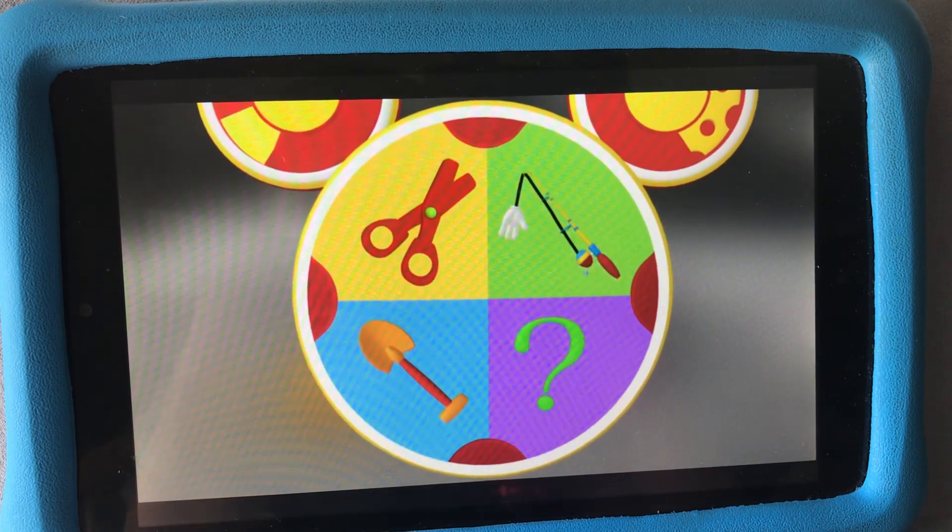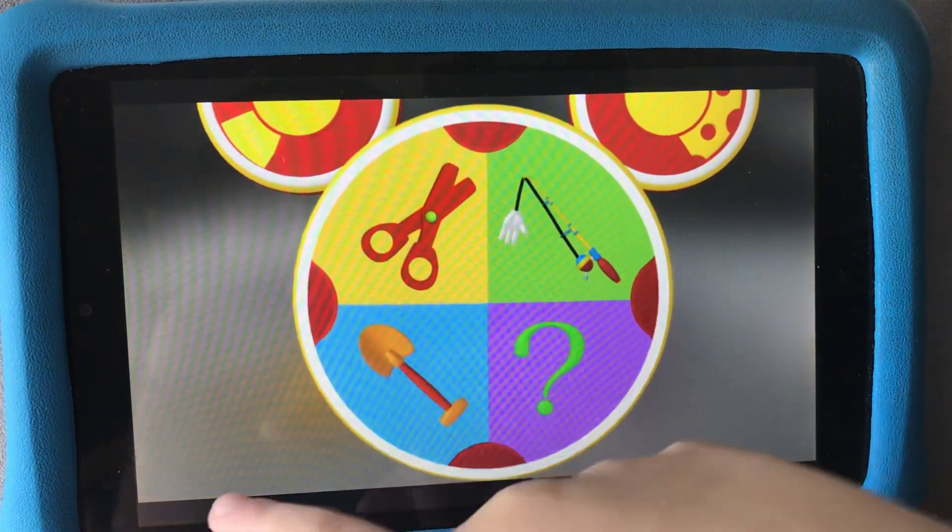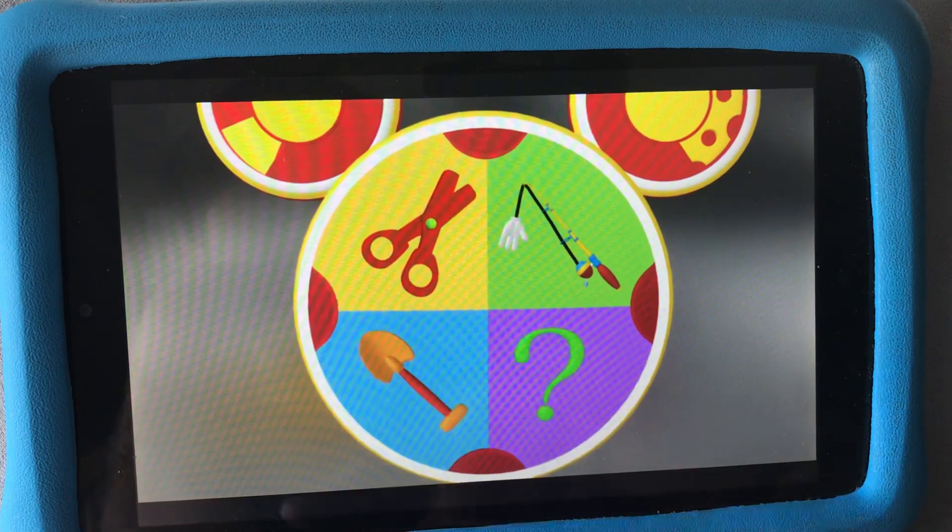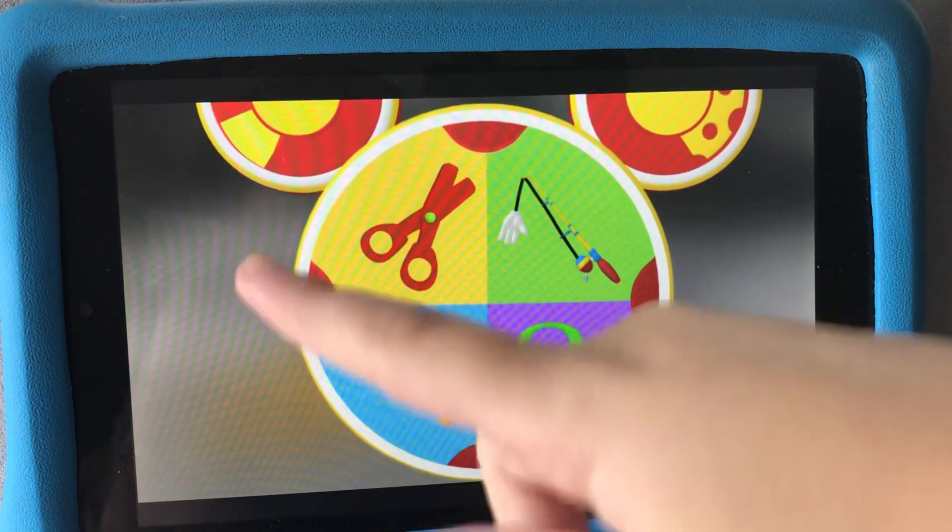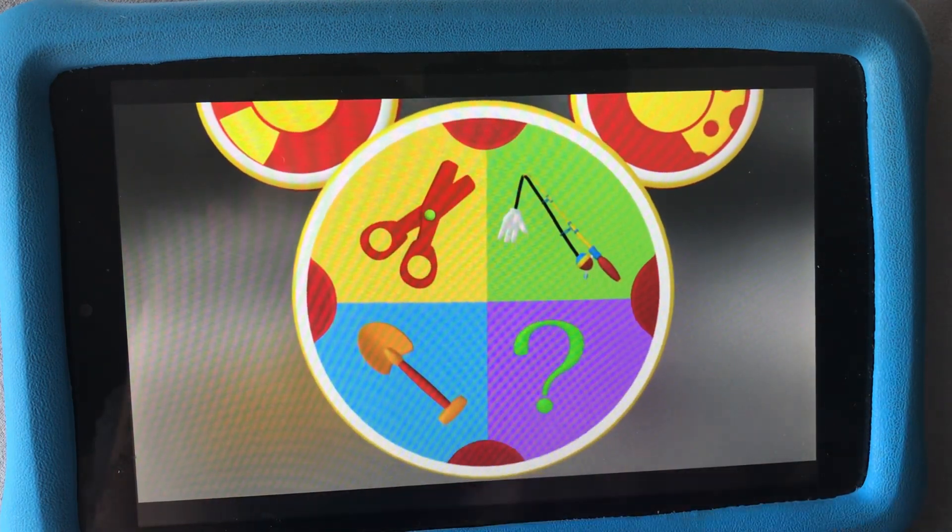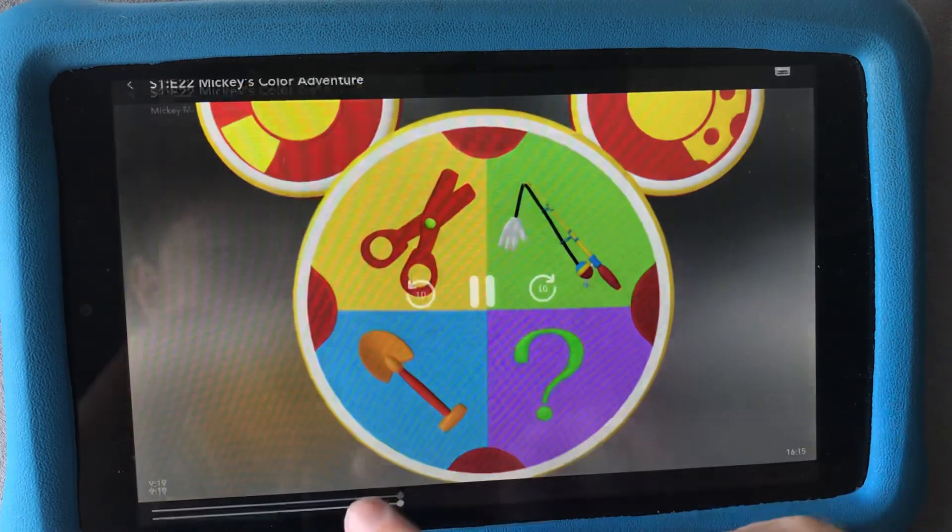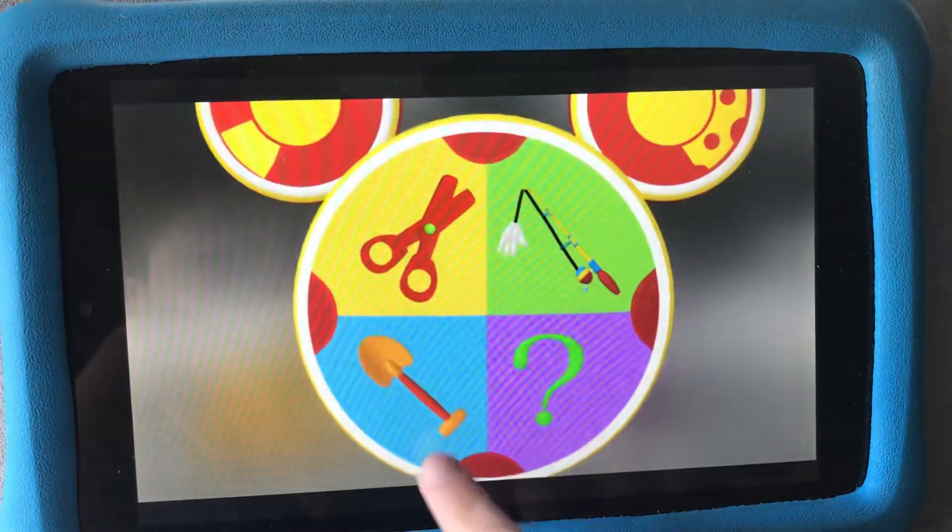Safety scissors, my fishing rod, a shovel, or the mystery Mouseketool. What can we use to dig out the yellow flower? The shovel, right.